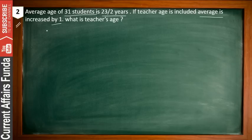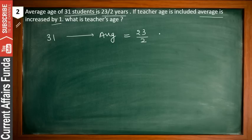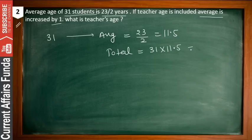There are 31 students and their average age is 23.5 years. So the total is 31 into 11.5, which gives 356.50. If the teacher's age is included, that means 31 plus 1 equals 32 students, and their average also increased by 1, so the new average is 23.5 plus 1, which equals 12.5.